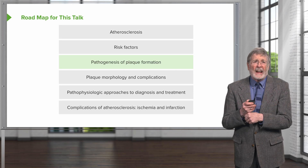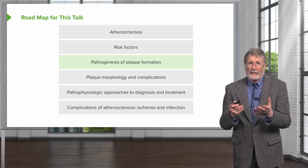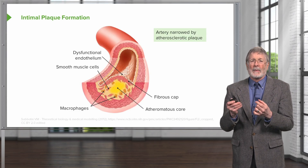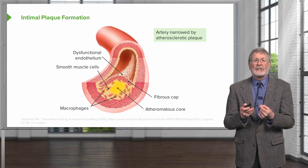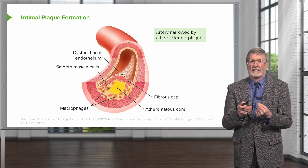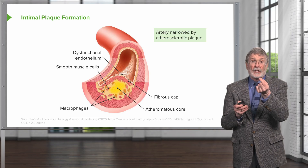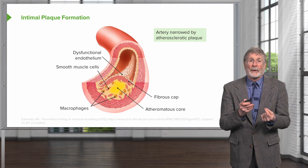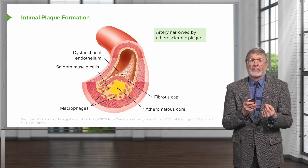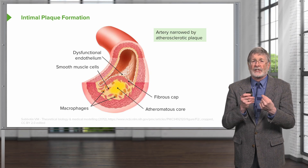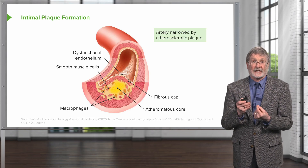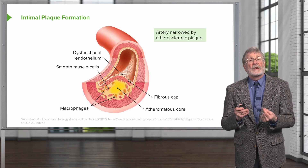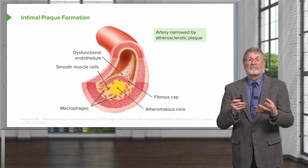Here we are roughly halfway through the roadmap for atherosclerosis. By way of review, remember that atherosclerosis is an intimal-based process. It's composed of dysfunctional endothelium, a fibrous cap overlying an atheromatous core, and driven by macrophage and other inflammatory cells and processes. That leads to narrowing of vessels or destruction of the vessel wall.